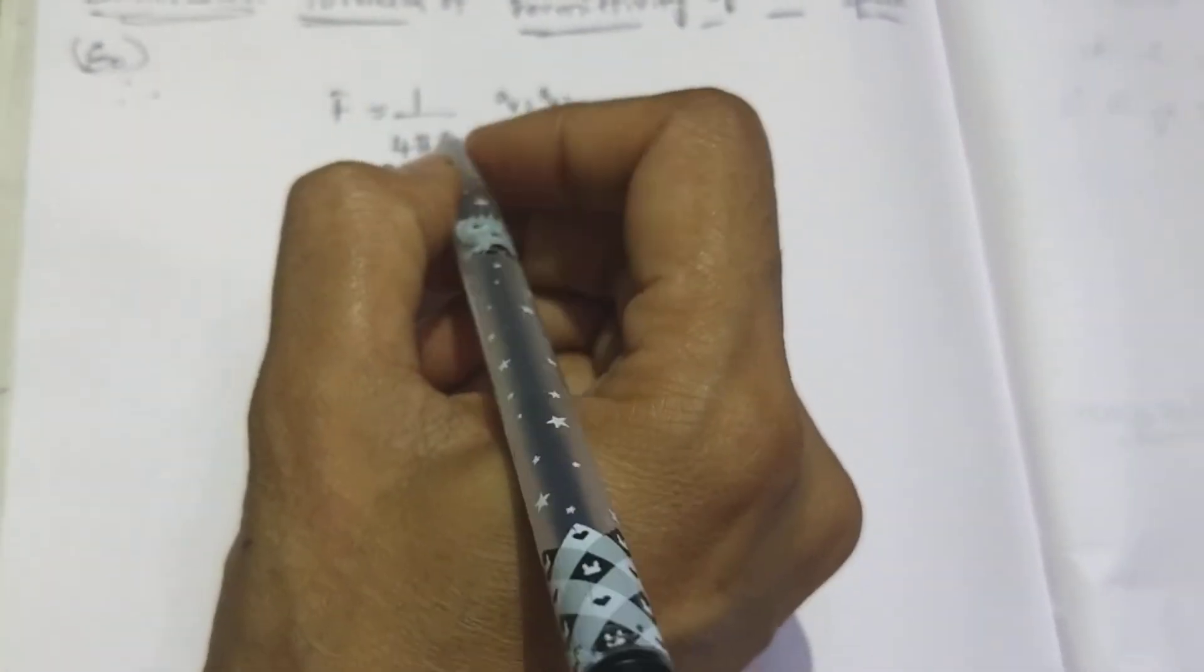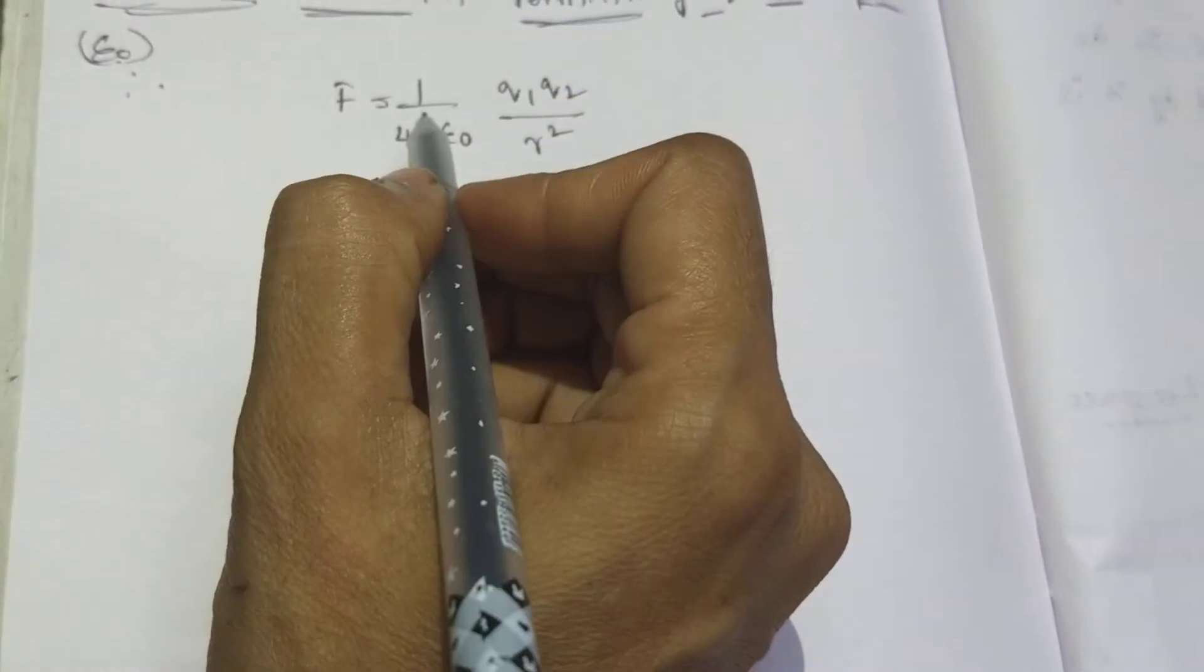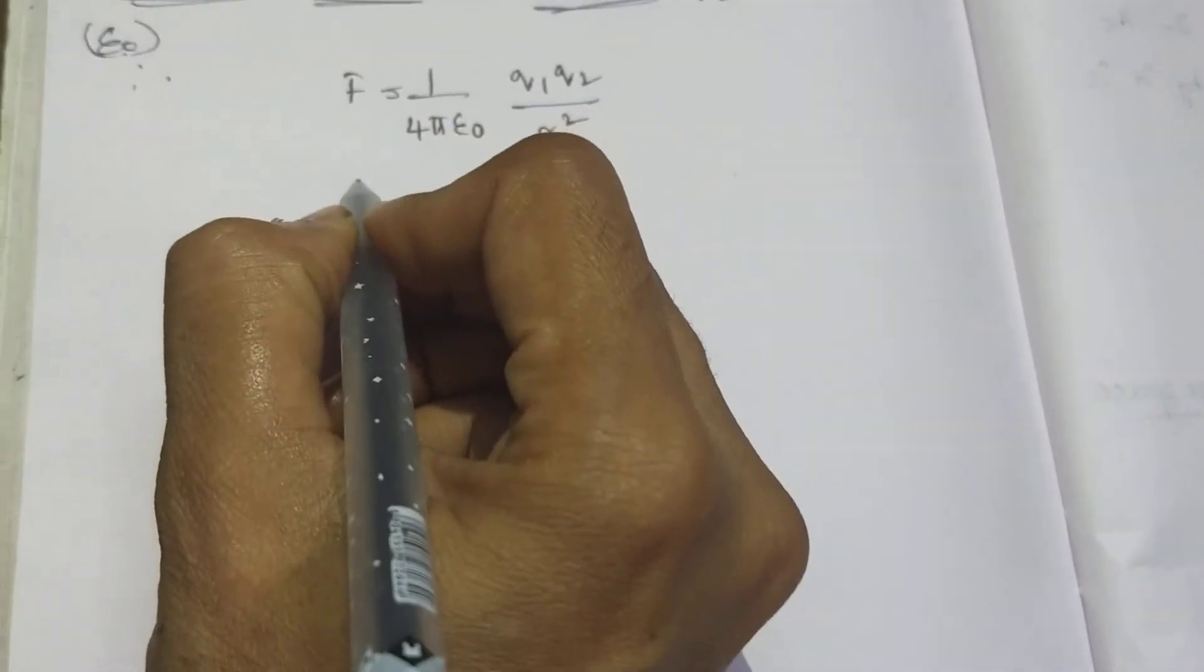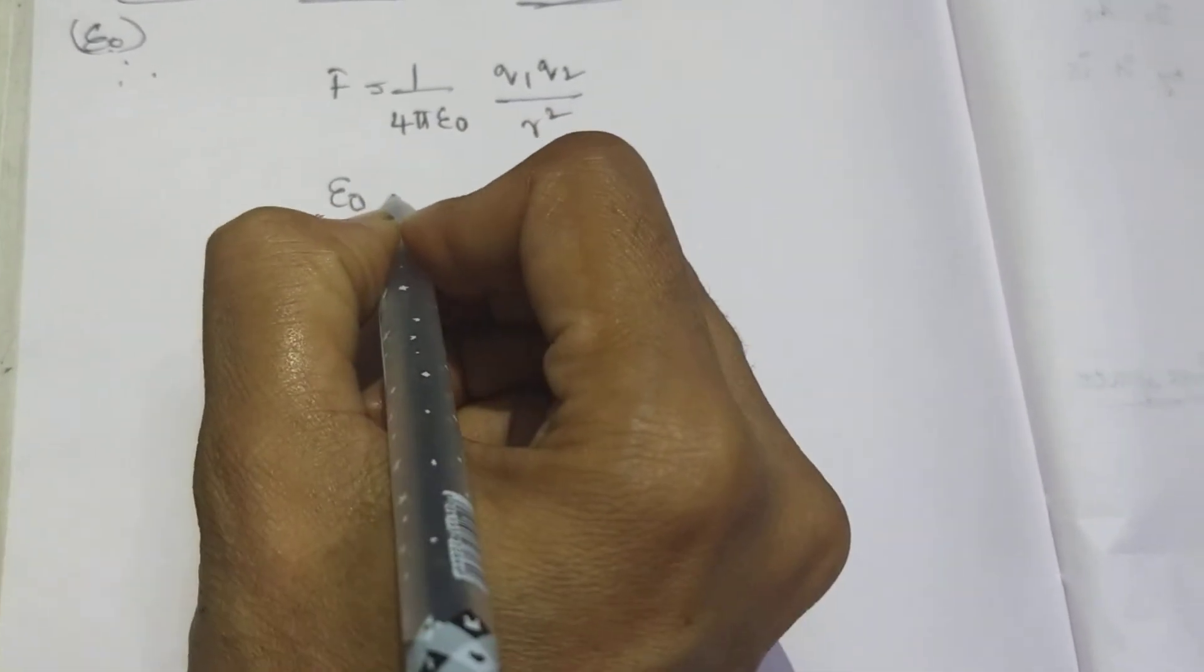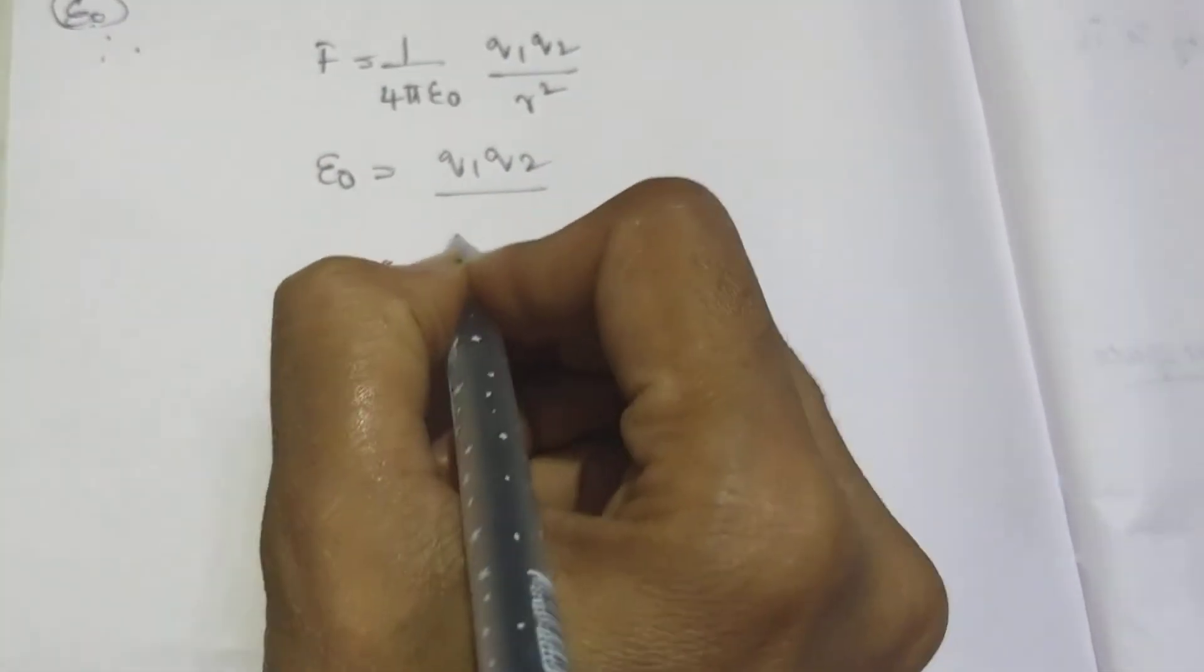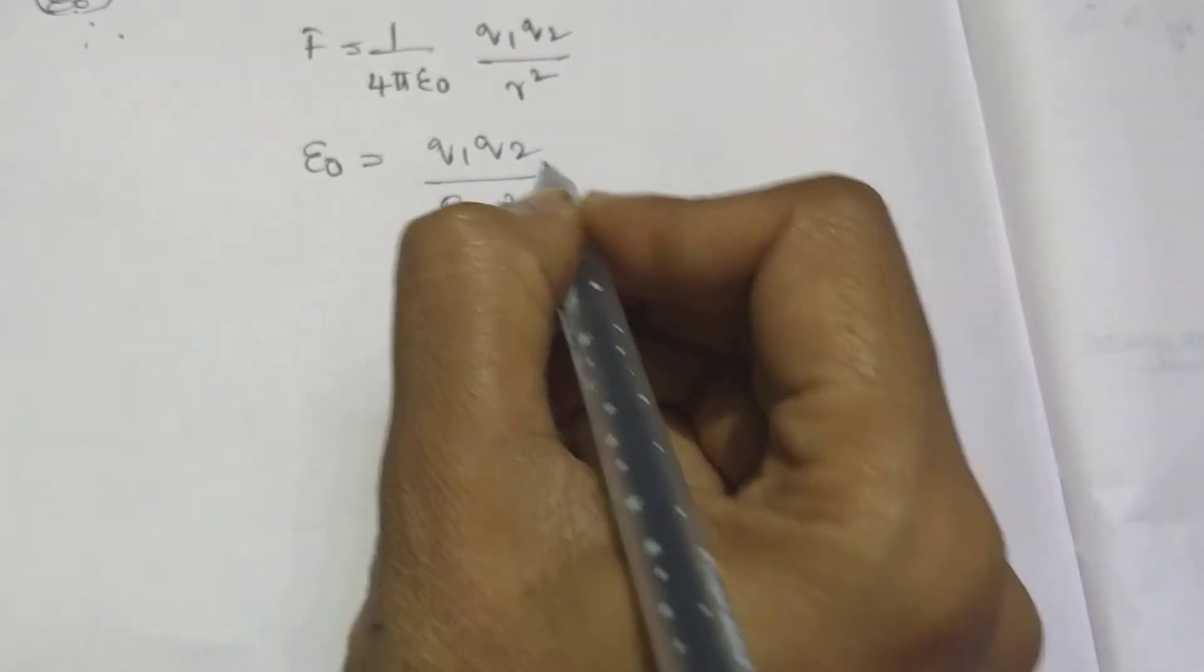For writing dimensional formula, these 1, 4 and pi are numbers. For numbers, we cannot write the dimensional formula. So I am writing this formula into epsilon naught equals Q1, Q2 divided by F into R square.